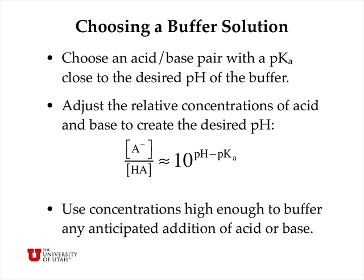We then adjust the relative concentrations of acid and base to create exactly the desired pH. Taking the Henderson-Hasselbalch equation and raising 10 to the power of both sides, the relative concentrations of base and acid needed is approximately 10 to the power of (pH minus pKa). If pH and pKa are the same, that's 10 to the 0 or 1, meaning equal concentrations of acid and base. If we want a pH slightly different from the pKa value, we adjust the relative concentrations to get exactly the right pH.